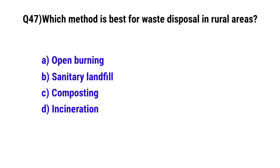Question number forty-seven: Which method is best for waste disposal in rural areas. The correct option is C, composting.